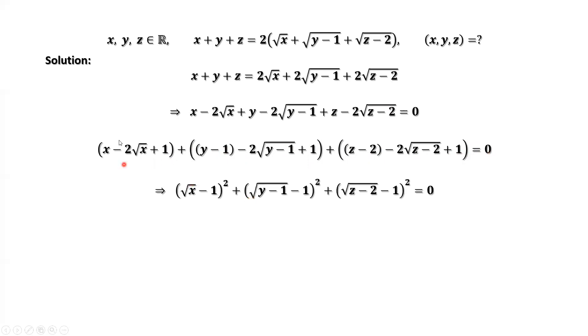What is the first part? The first part is the square root of x minus 1, then square. Because x equals square root of x, then square. Similarly here, y minus 1 equals square root of y minus 1, then square. Therefore, this second group is square root of y minus 1, then square.